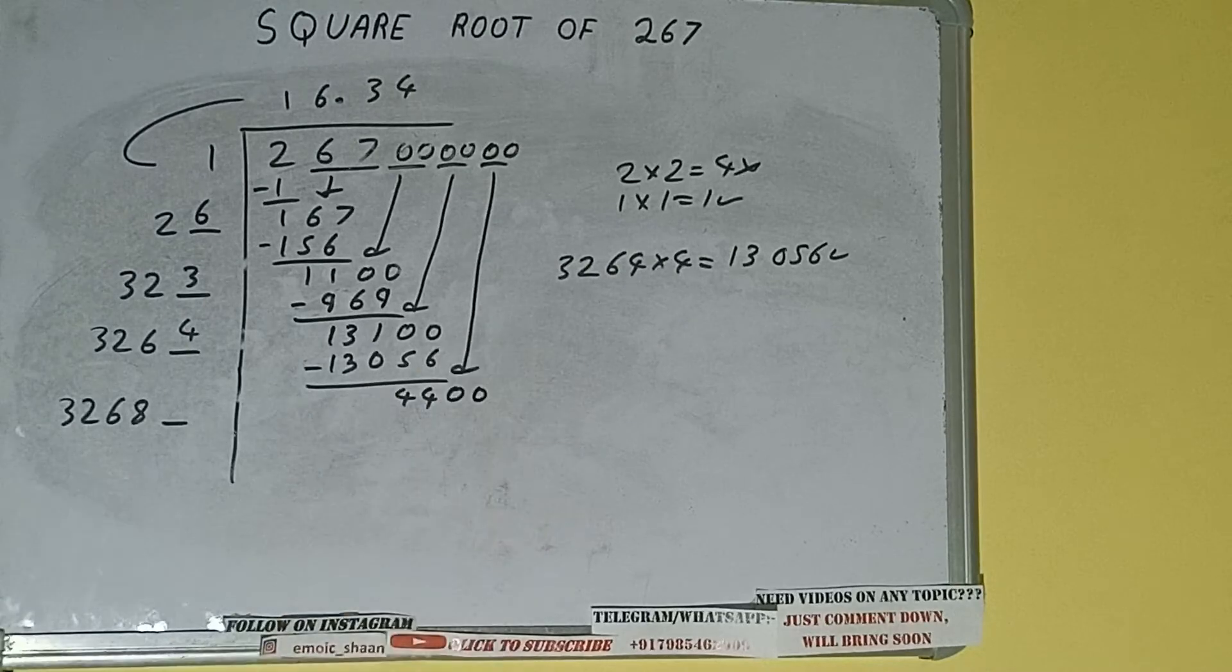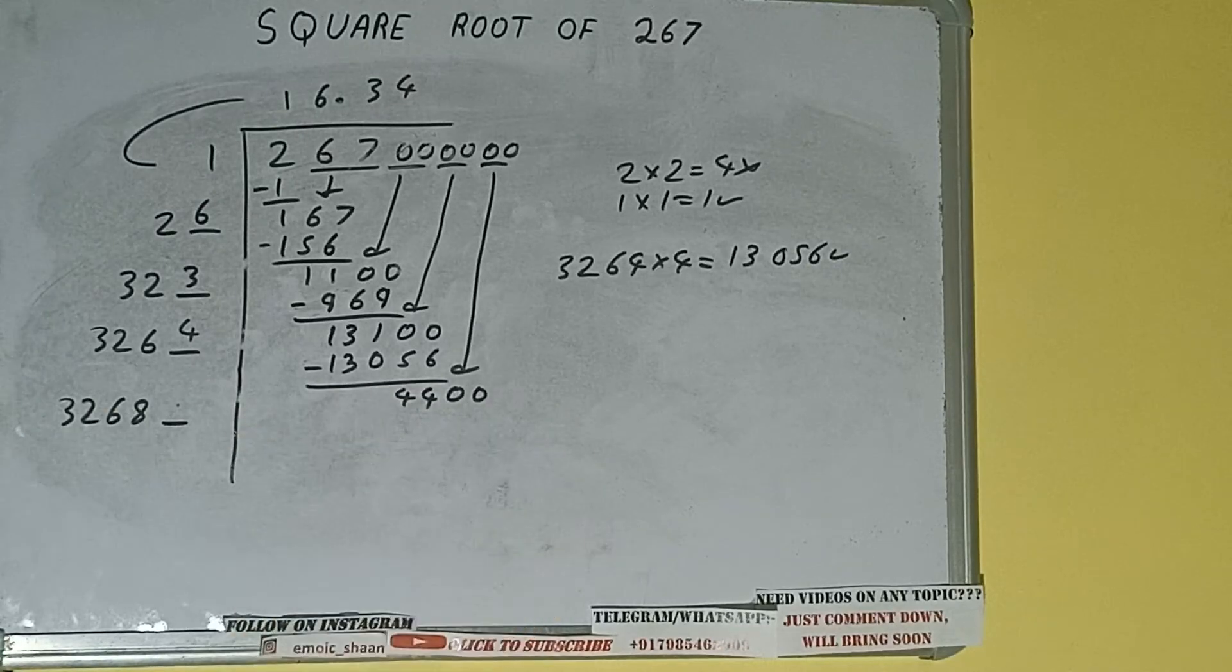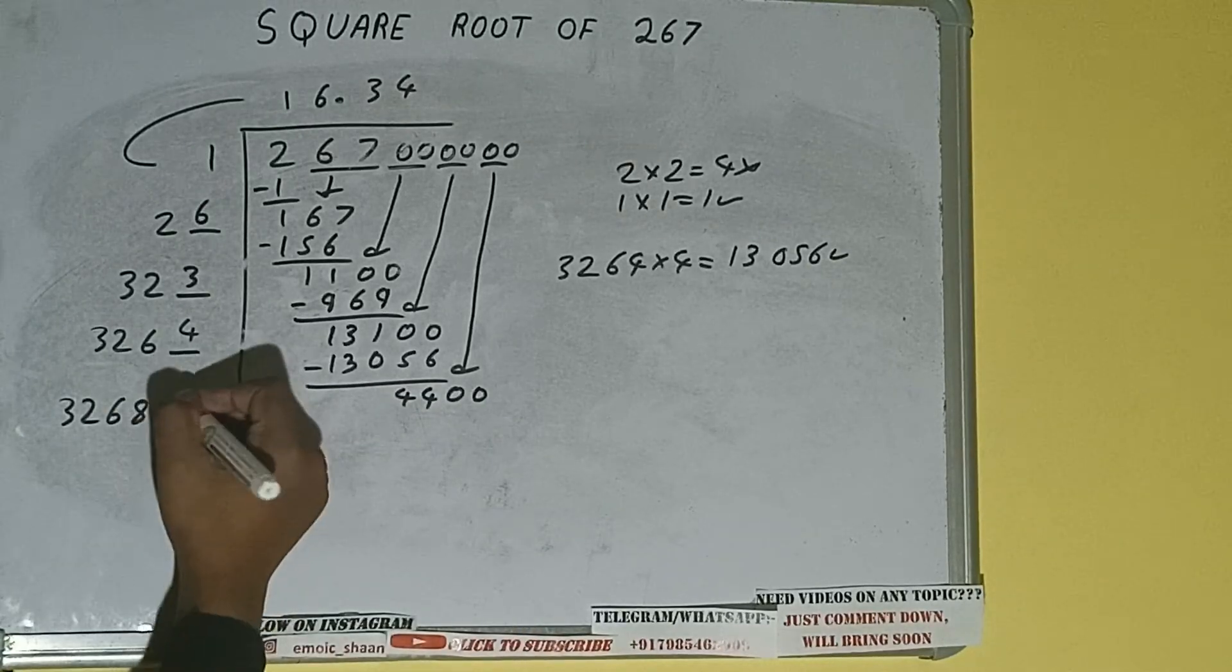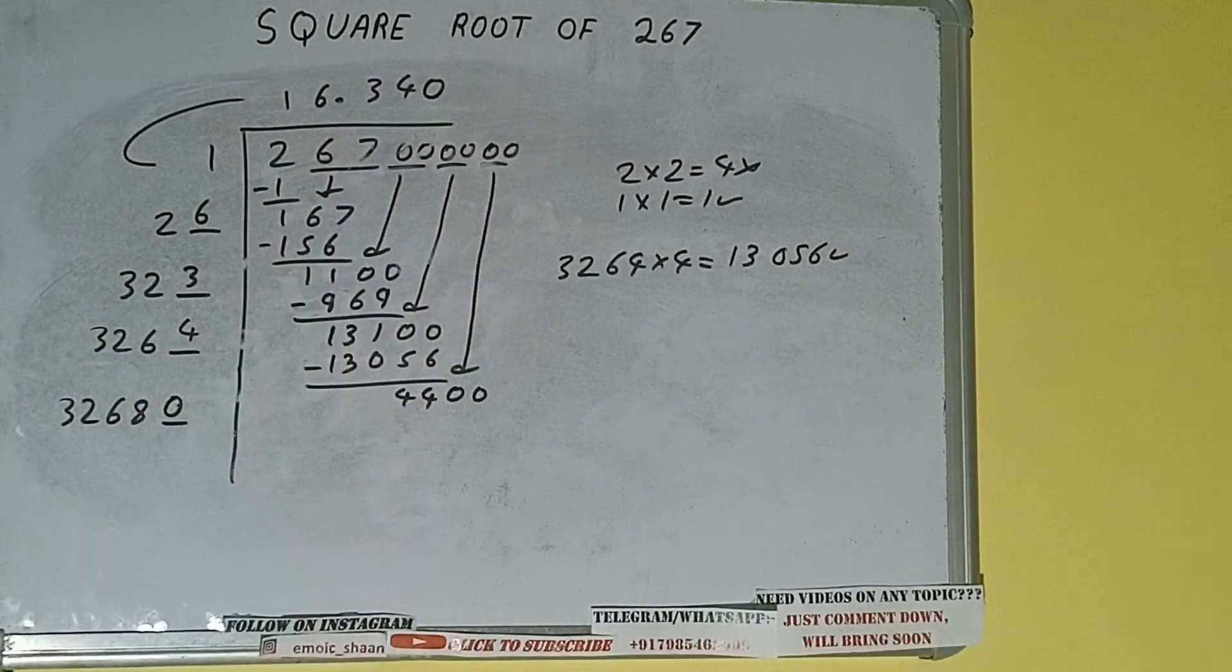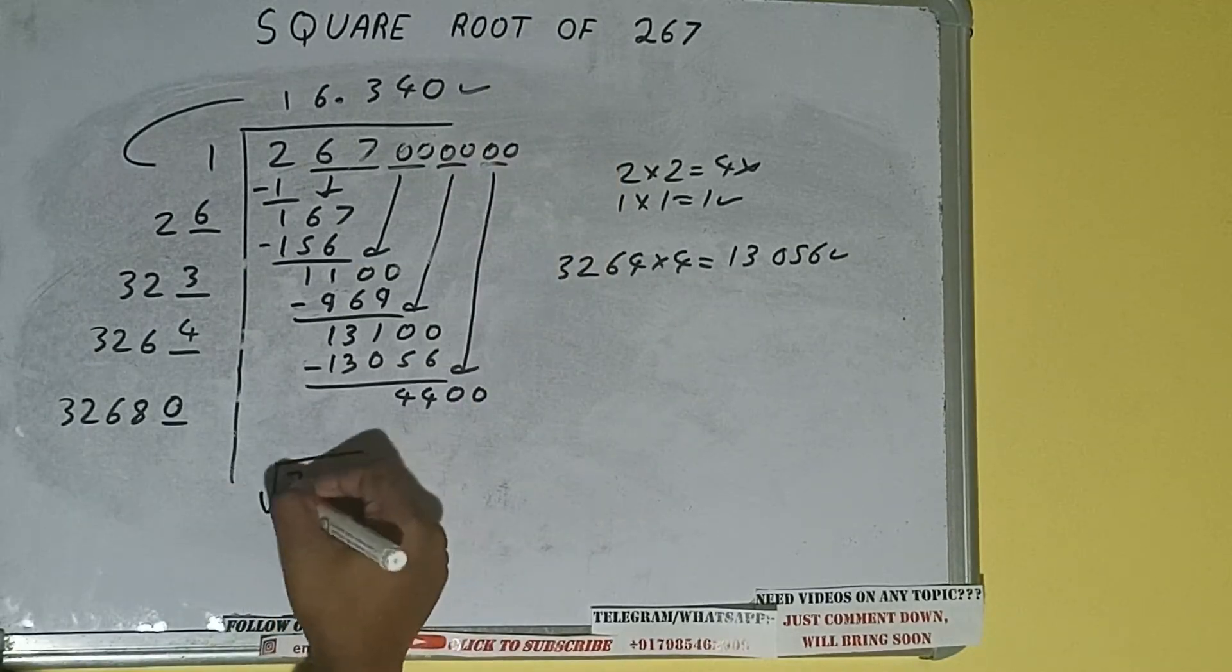Now we can see if we write one here we'll get a number greater than 4400, so we cannot use one. We'll be using zero here and zero here, but we don't need to calculate because we got the answer correct up to three decimal places. So square root of 267 will be 16.340, that will be the answer.